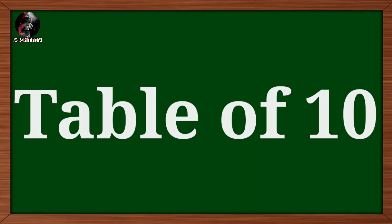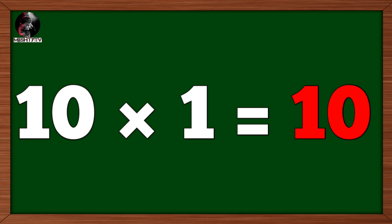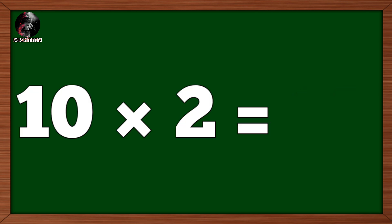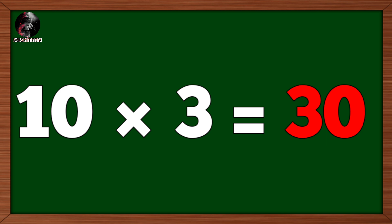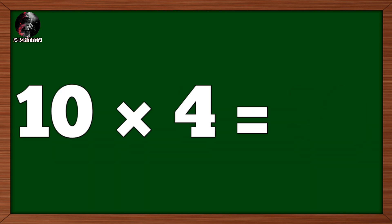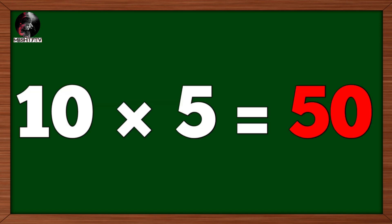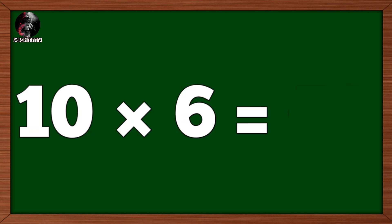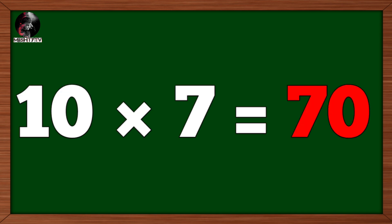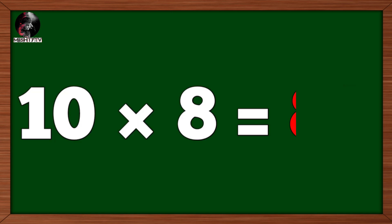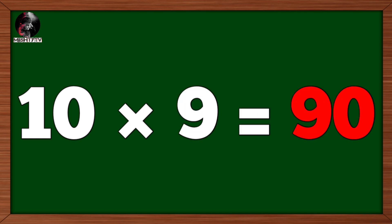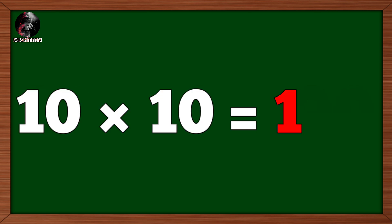Table of ten. Ten one's are ten. Ten two's are twenty. Ten three's are thirty. Ten four's are forty. Ten five's are fifty. Ten six's are sixty. Ten seven's are seventy. Ten eight's are eighty. Ten nine's are ninety. Ten ten's are one hundred.